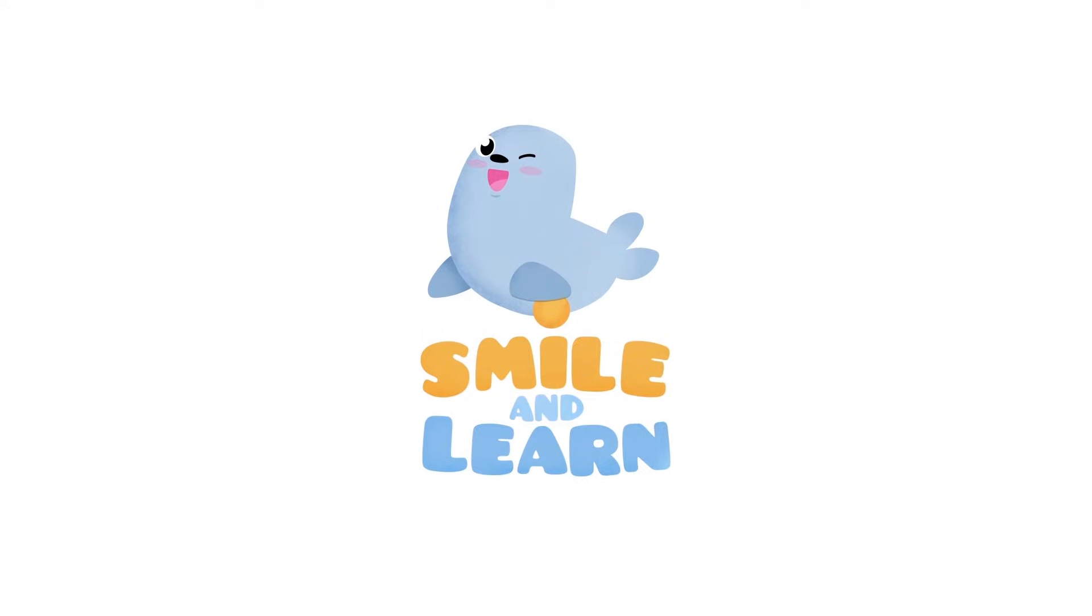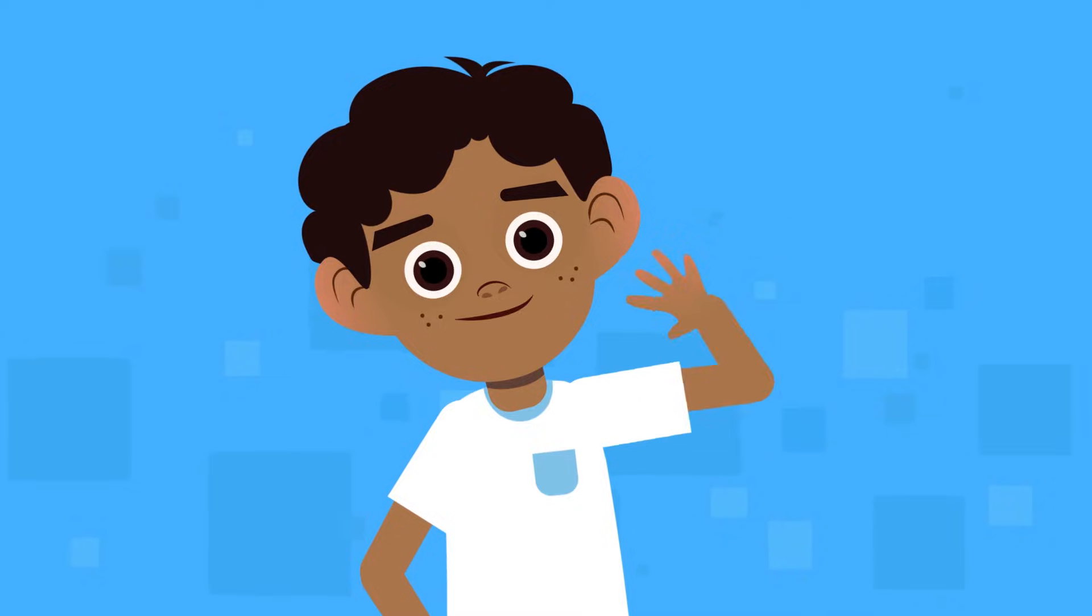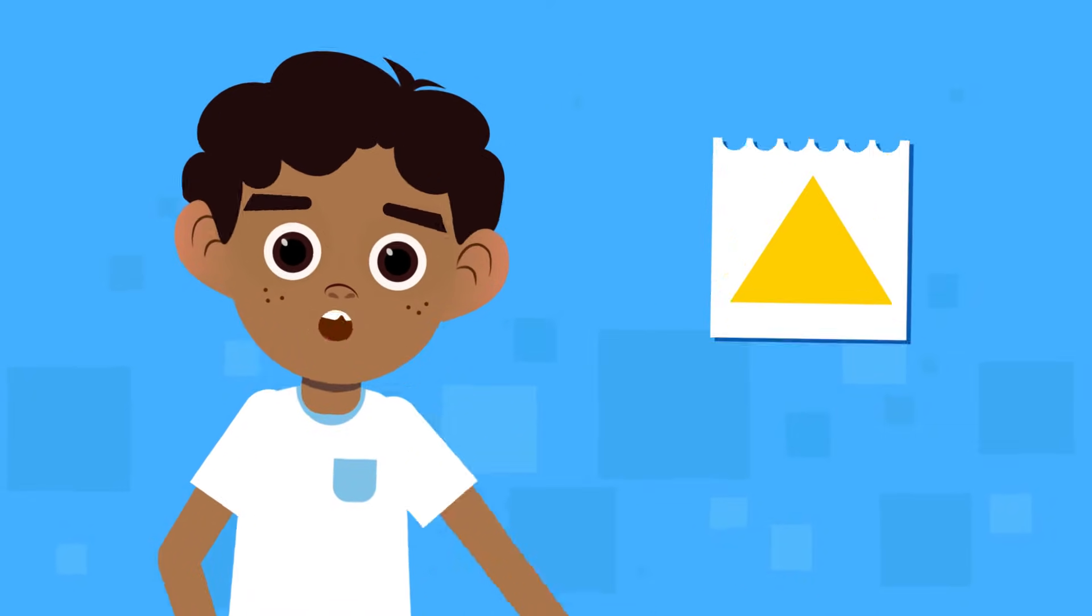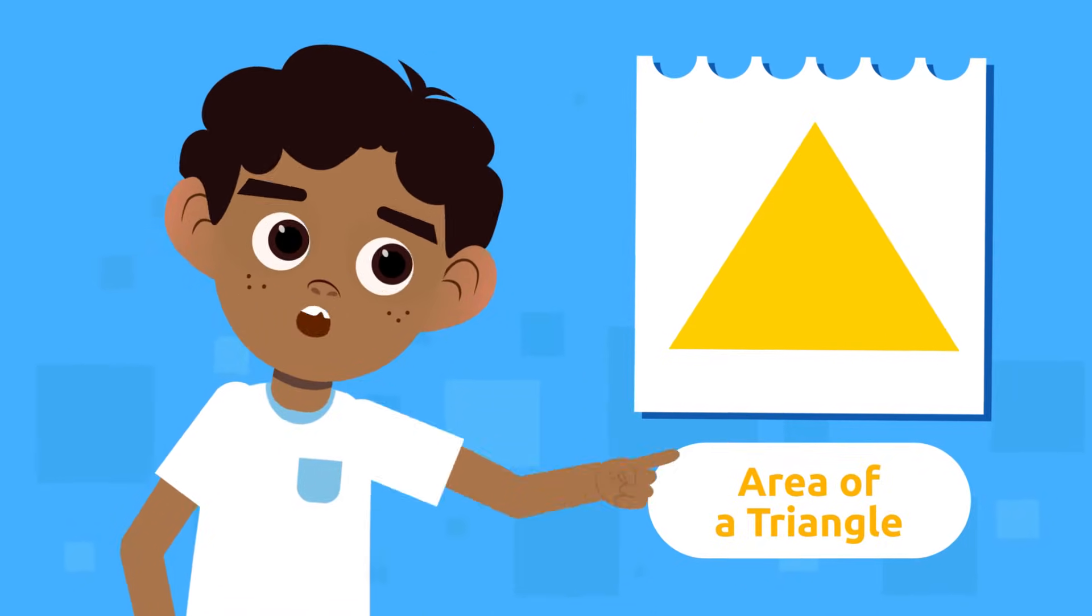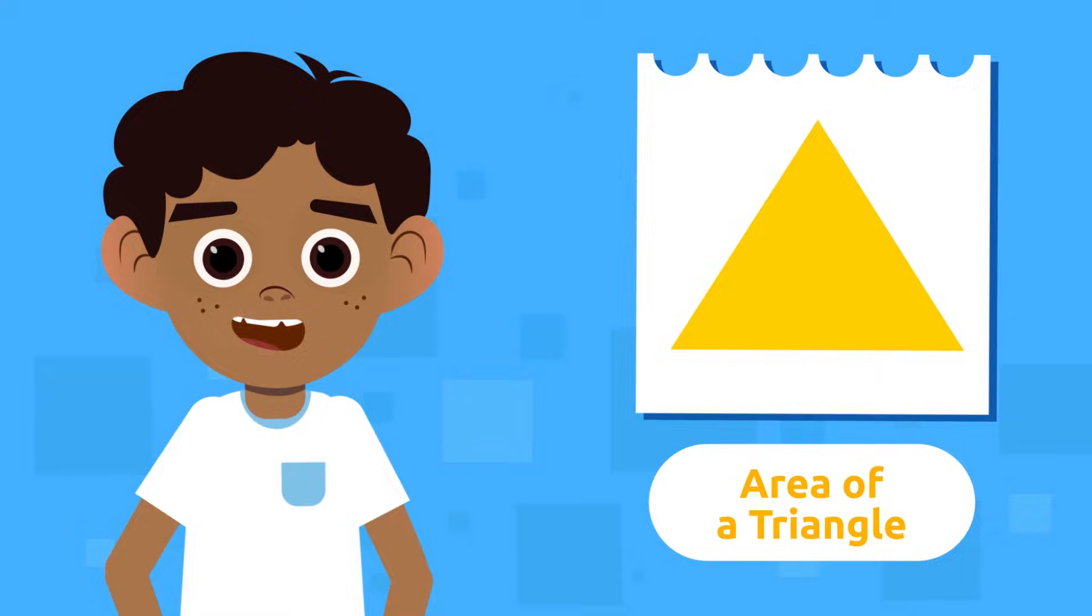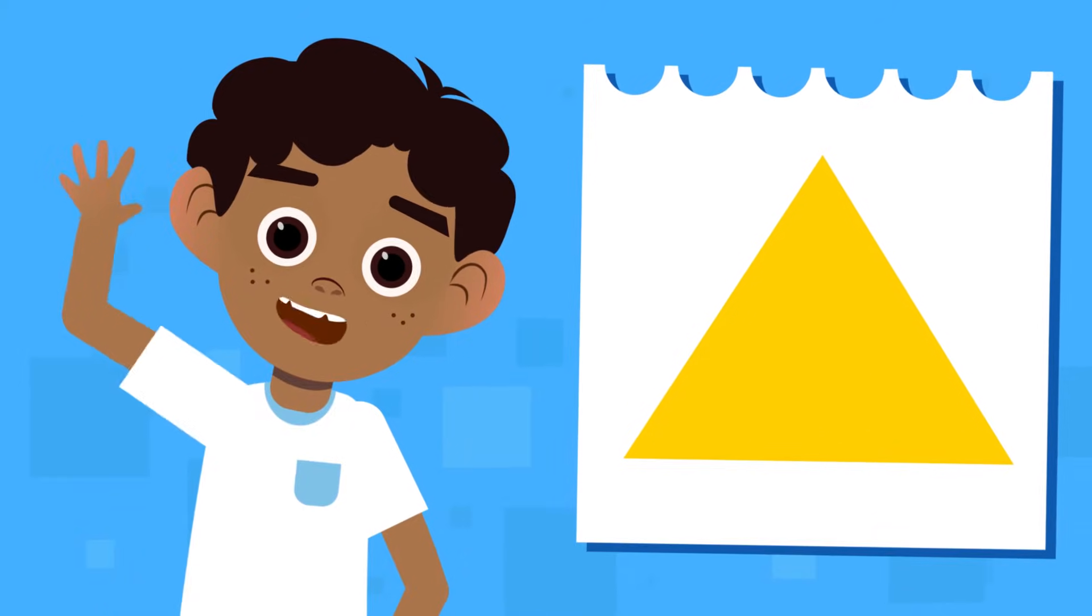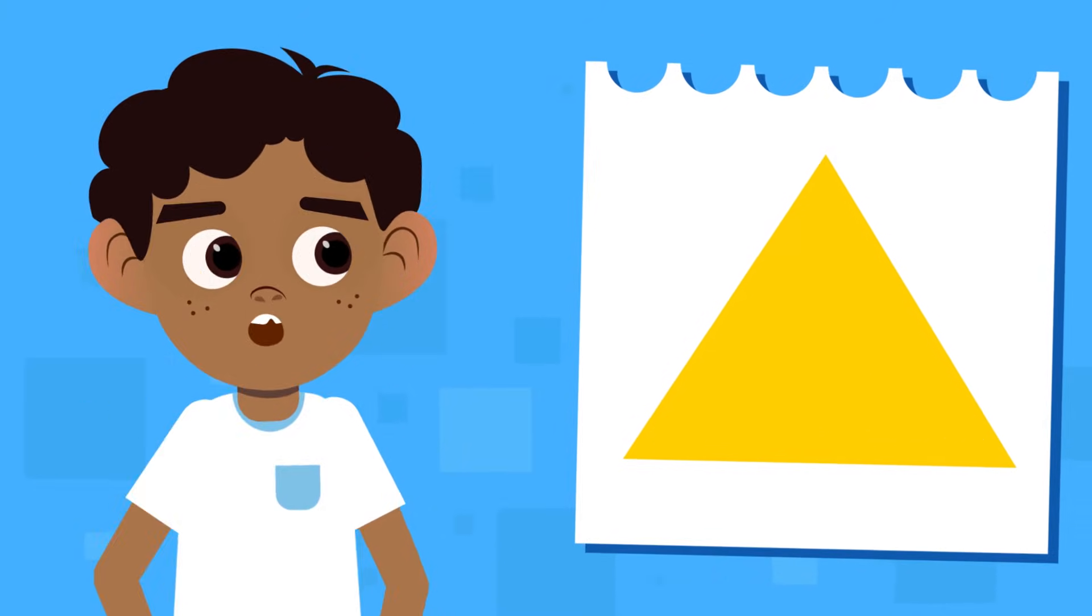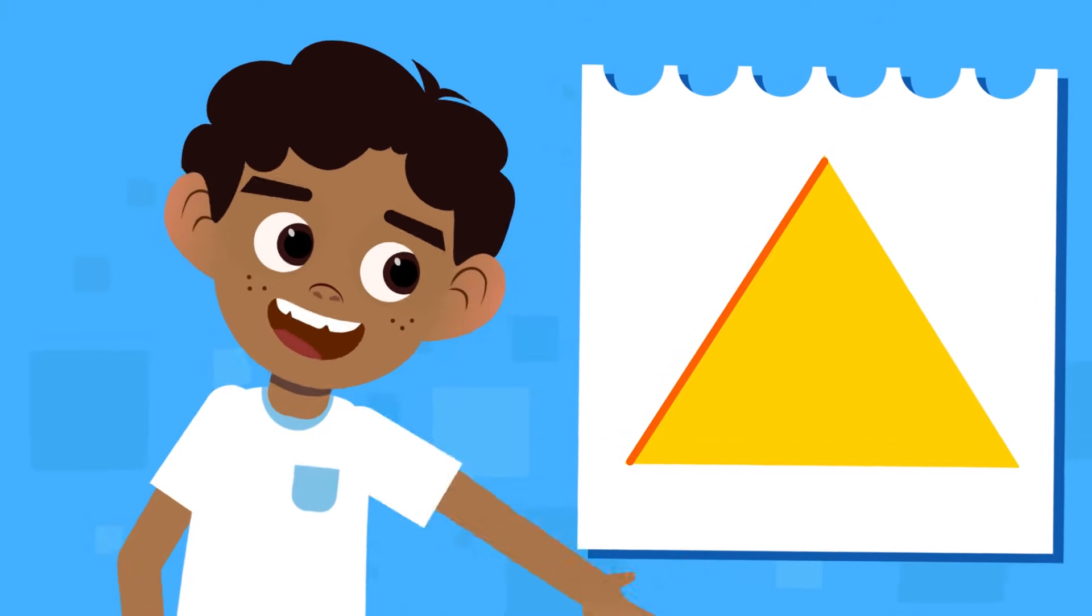Smile and Learn! Hello friends, today we're going to show you how to calculate the area of a triangle, also called the surface of a triangle. Let's start by remembering what a triangle is. A triangle is a plane figure with three sides that forms three angles and three vertices.